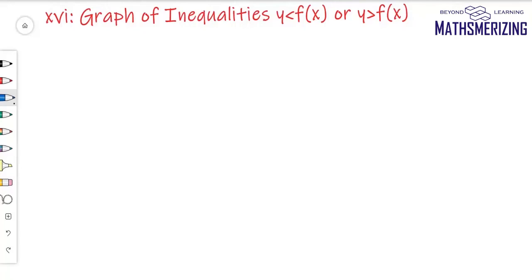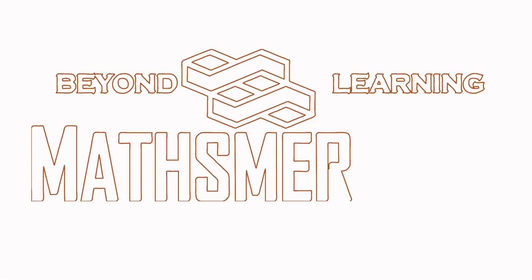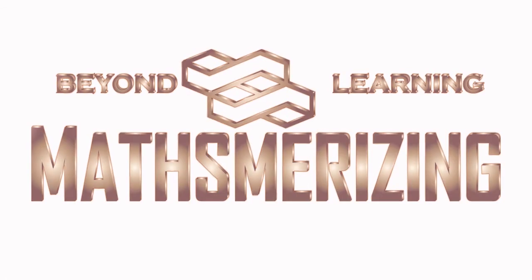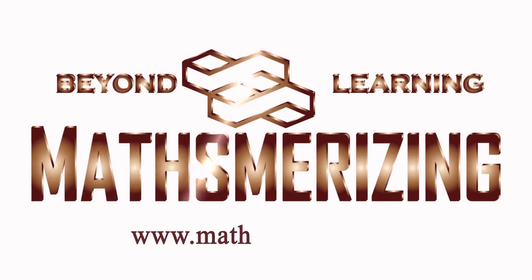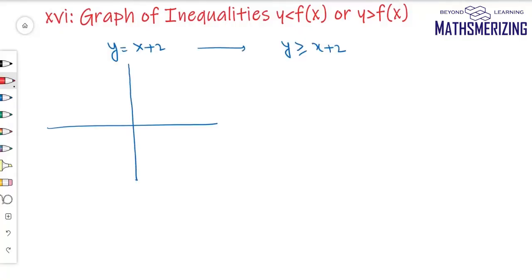The 16th and one of the very important transformations is to plot inequalities from a given equality. I'll take up an example and draw this straight line. When x is 0, y is 2, and when y is 0, x is minus 2, so I'll draw this line.